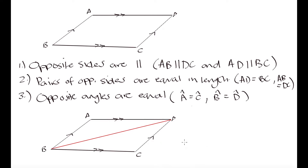If we label the angles as 1 and 2 to distinguish between the two separate angles we've created, we can notice alternate interior angles. Angle D1 is going to be equal to angle B1 because these are alternate interior angles — inside the parallel lines and on opposite sides of the transversal. Similarly, angle B2 is going to be equal to angle D2 for the same reason.